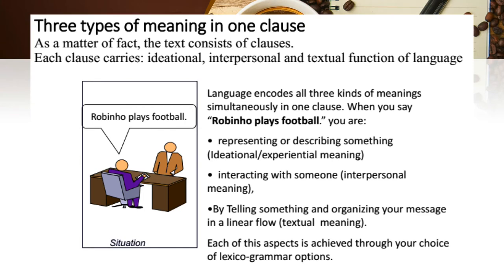To further illustrate these metafunctions of language, let us take a look at this example. There are two people having a conversation. One says: 'Robin Ho plays football.' In this simple clause, language encodes three types of meaning. On the ideational level, the person who is talking is describing something. On the interpersonal level, they are interacting with one another. And on the textual level, the person who is talking is organizing his message in a linear flow.